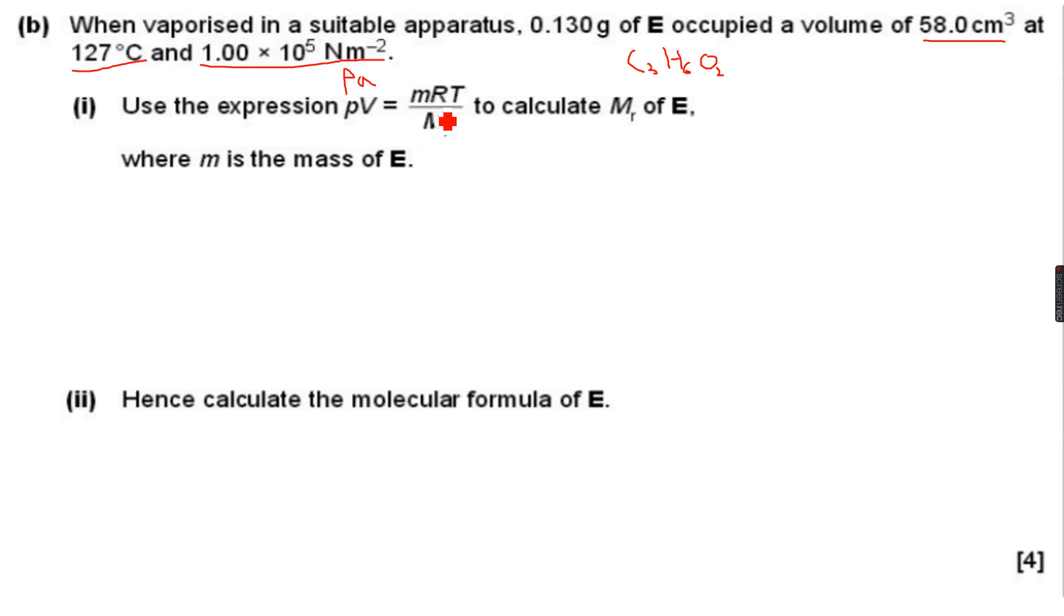Use the expression PV equals MRT over MR to calculate MR of E. You must be thinking that the equation we did was PV equals nRT, right? So where did they get this equation from? You must be thinking how did they get this equation and why aren't we using this equation. If you see, what is n? n is m over MR. So that's what they have done - they have replaced n with m over MR. You need to remember this concept.